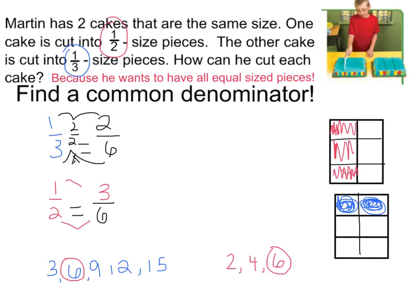Those are all same size pieces. I can tell right away that one-half — I'll shade in my one-half, which also equals 3/6 — is greater than one-third, one part out of three parts. So I can see that they now have a common denominator. One-third equals 2/6, and one-half equals 3/6.